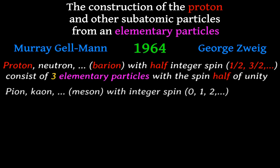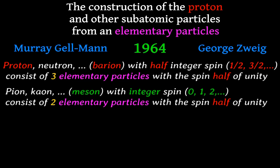Particles with integer spin, called mesons, consist of two elementary particles.